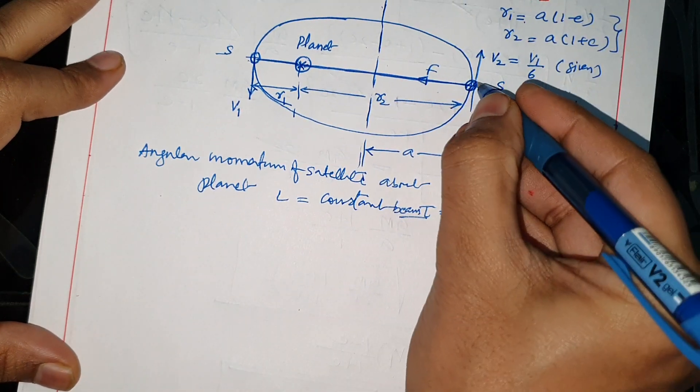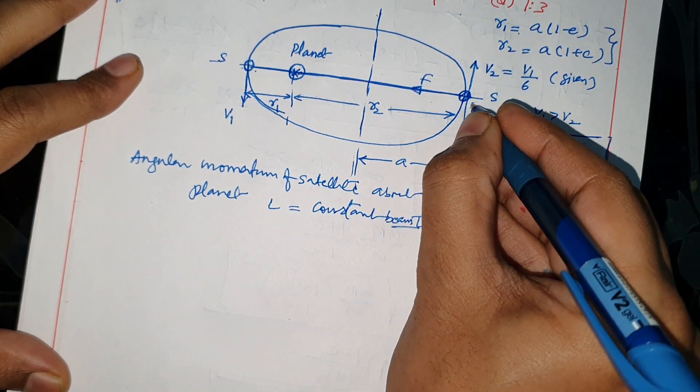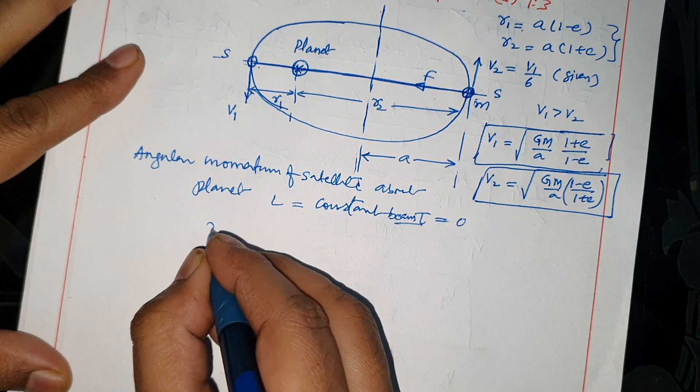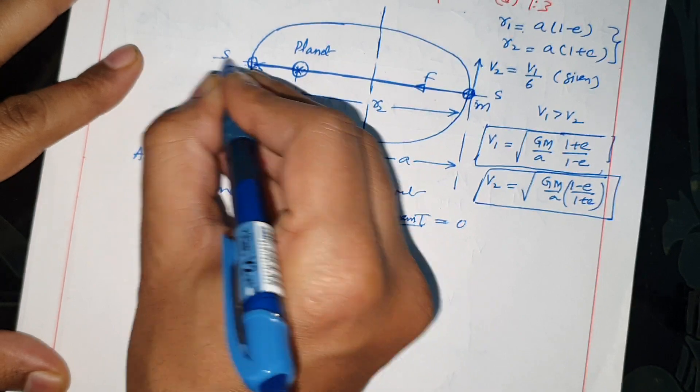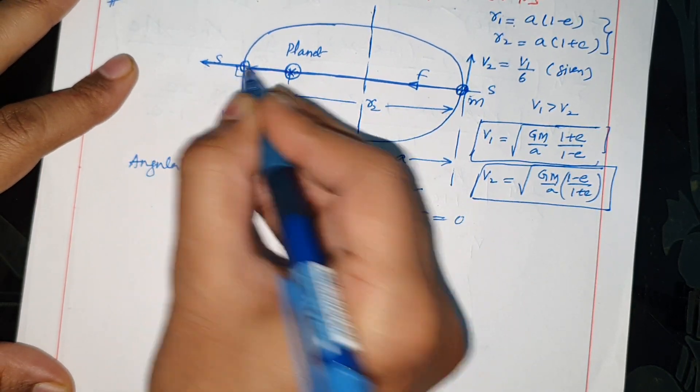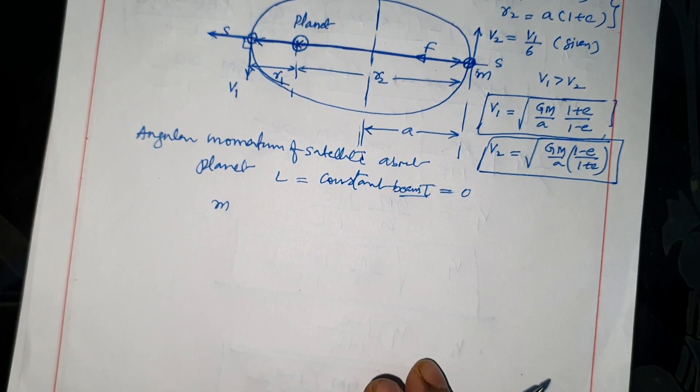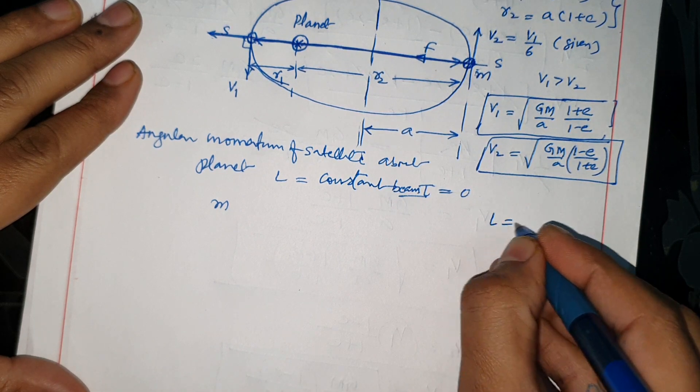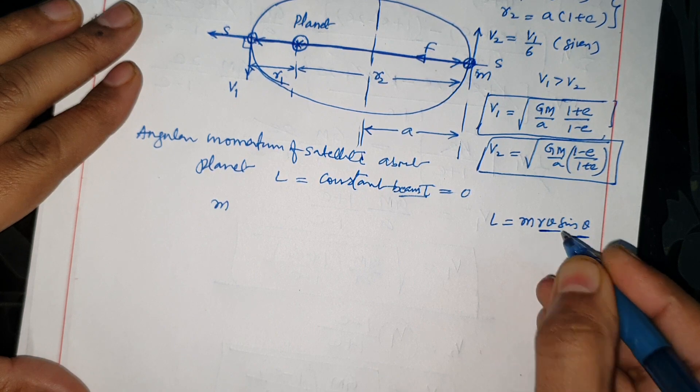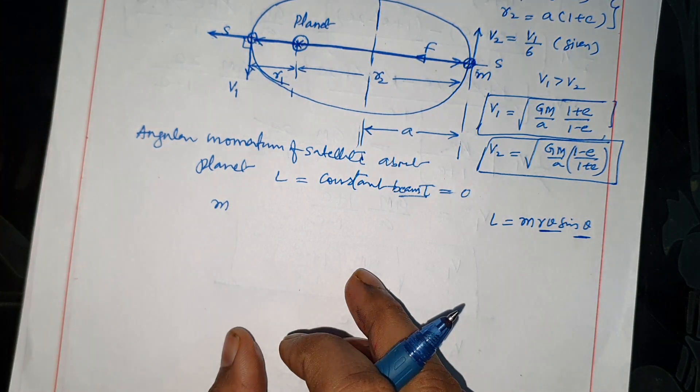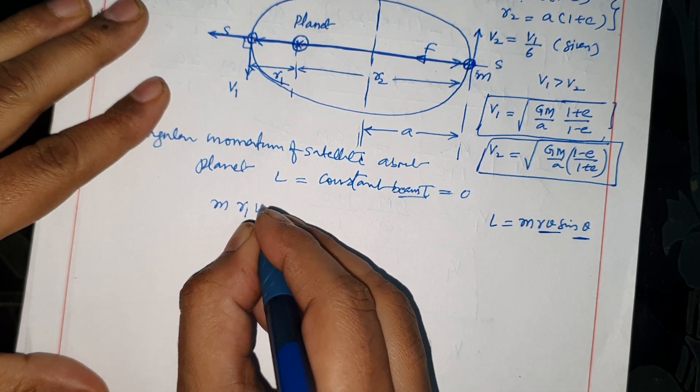L is constant at this point. L equals mass of satellite M times R1 vector V1. R1 vector and V ke beech mein angle is 90 degree. Angular momentum actually is M R V sin theta. Theta is the angle between R and V. M R1 V1 sin 90.